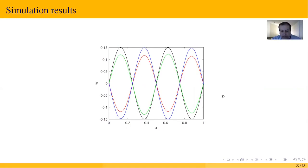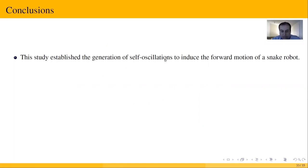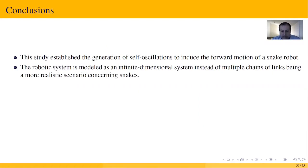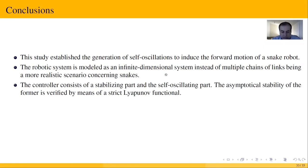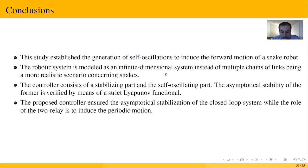This study establishes the generation of self oscillation to induce the forward motion of a snake robot. The robotic system is modeled as an infinite-dimensional system instead of multiple chains of links being a more realistic scenario concerning snakes. The controller consists of a stabilizing part and a self oscillation part. The asymptotical stability of the former is verified by means of a strict Lyapunov functional. The proposed controller ensures the asymptotical stabilization of the closed-loop system, while the role of the two-relay is to induce the periodic motion.